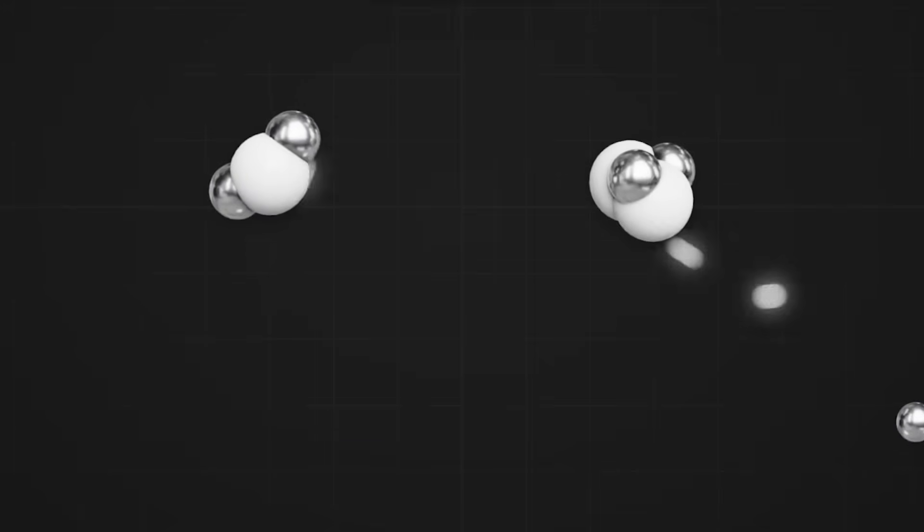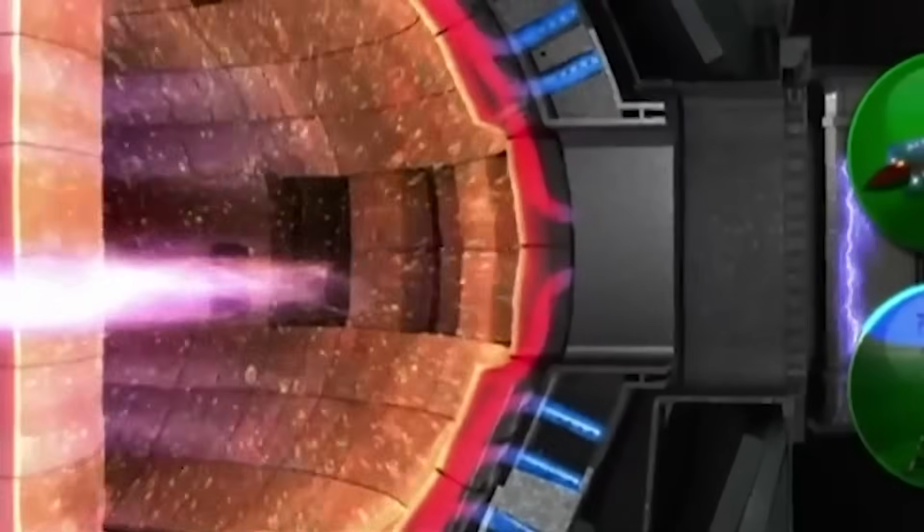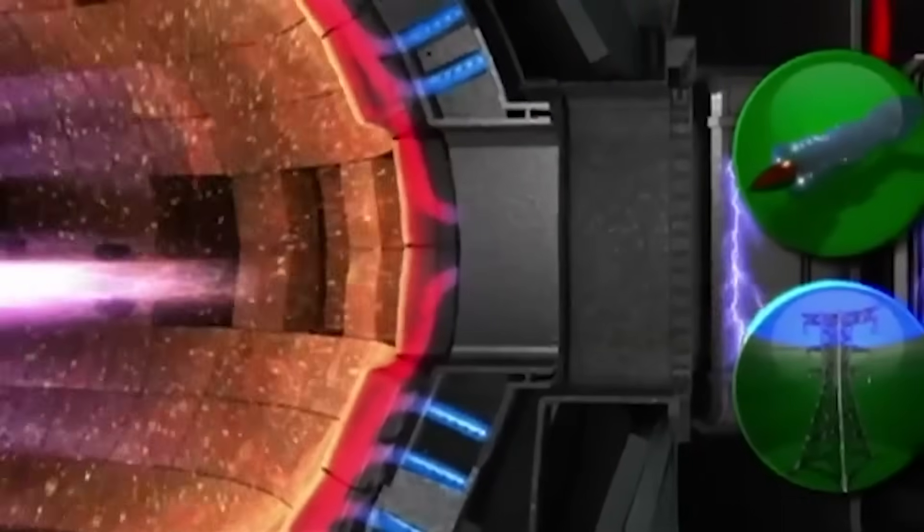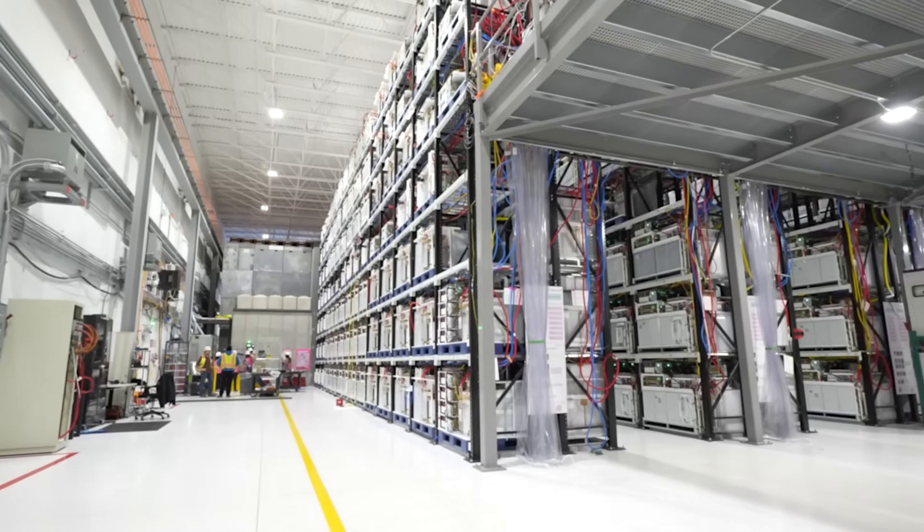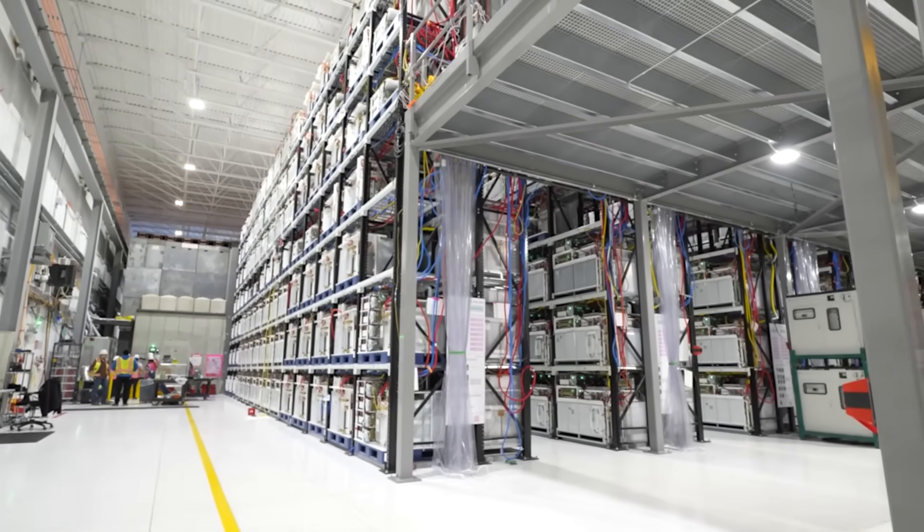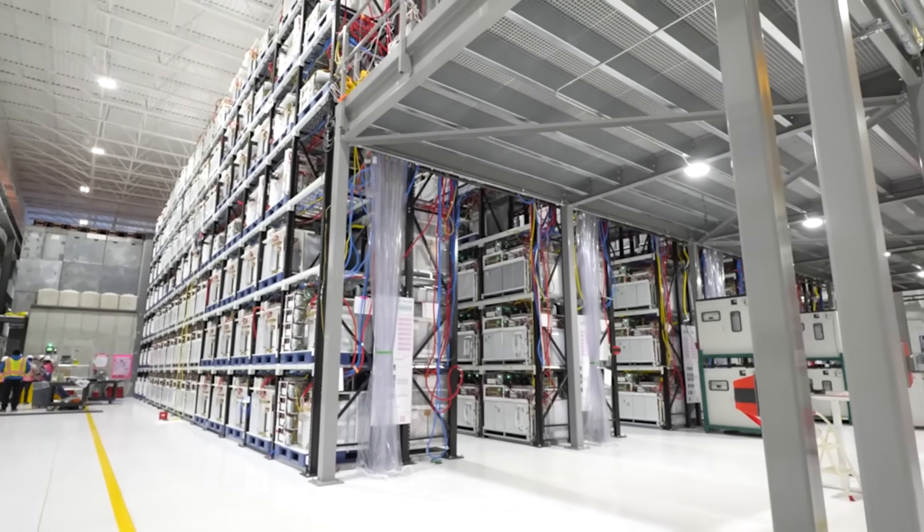Move a pulse by a few tens of nanoseconds, and you might get noticeably more fusion. Do it wrong, and the plasma can hit the wall. Or, you can punish your power system. This is why Helion builds like a hardware company and a timing company at the same time.